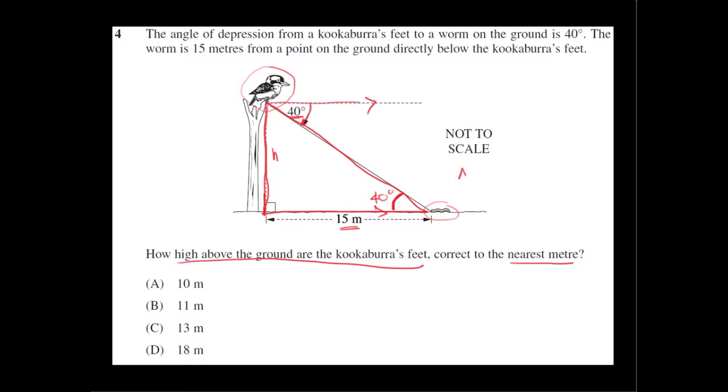because alternate angles are equal, because these two lines are parallel. So we've got a right angle triangle, with this angle being 40, and we have to find H. So the H is the opposite side, opposite to the 40 degrees.